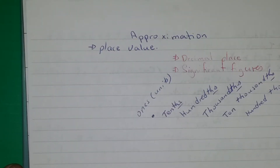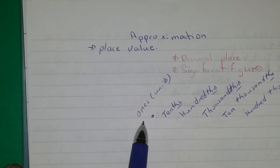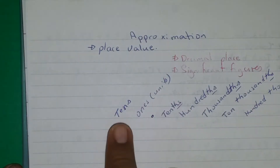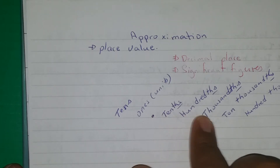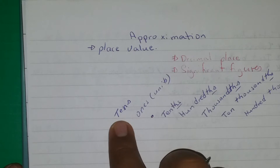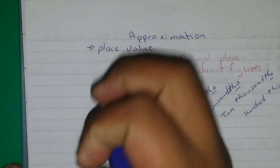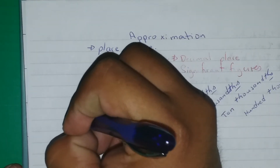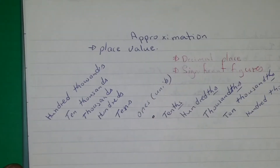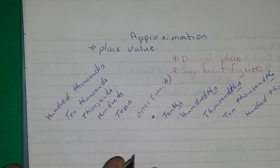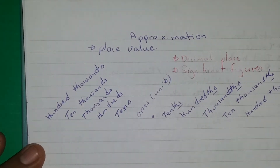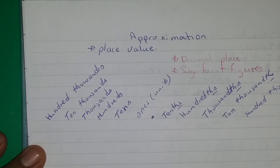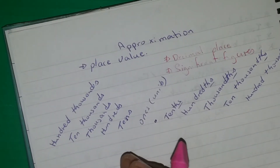On the other side we have ones or units. So if you're being asked to round off to the units or the ones place value, you are talking about the first number here. Then you have tens — notice it ends with 's'. On the other side it's '-ths', '-ths', '-ths' all the way. So here we have tens, then hundreds, then thousands, ten-thousands, hundred-thousands, then millions, ten-millions, and so on.